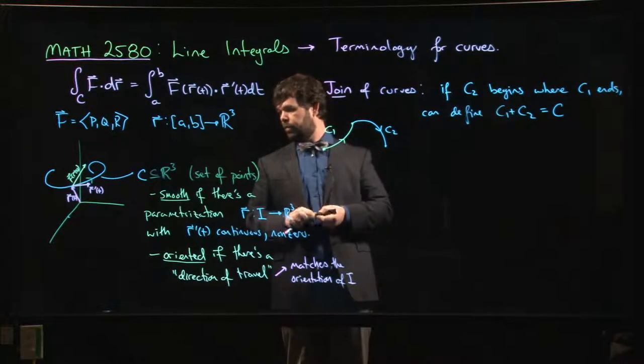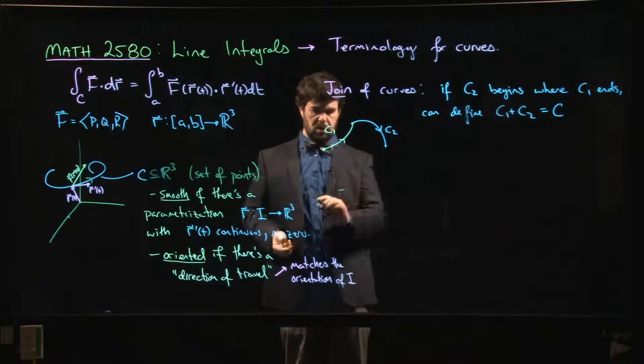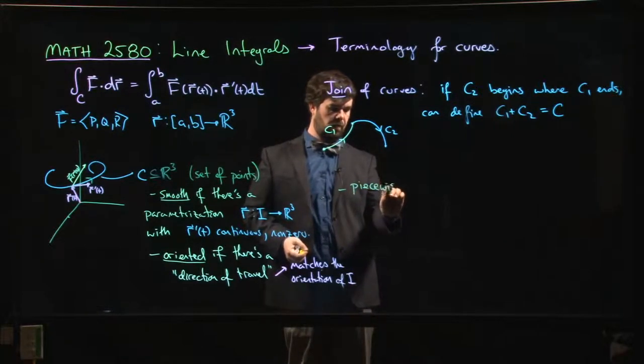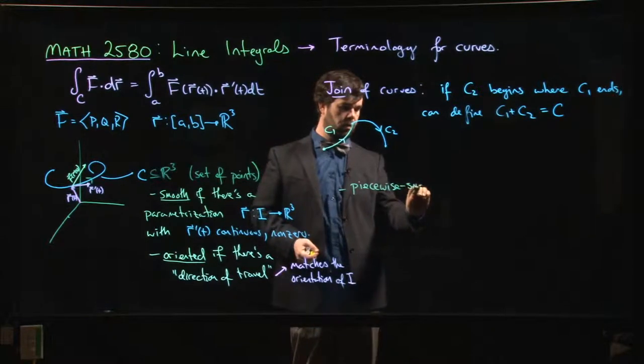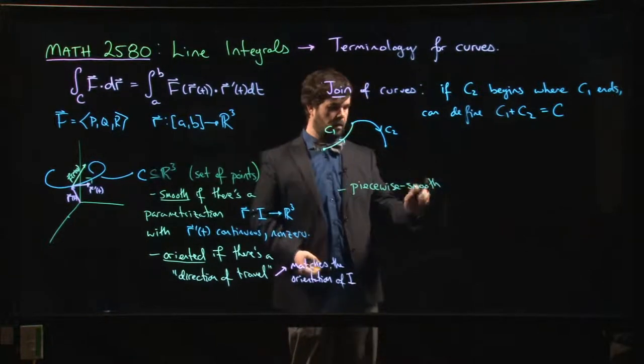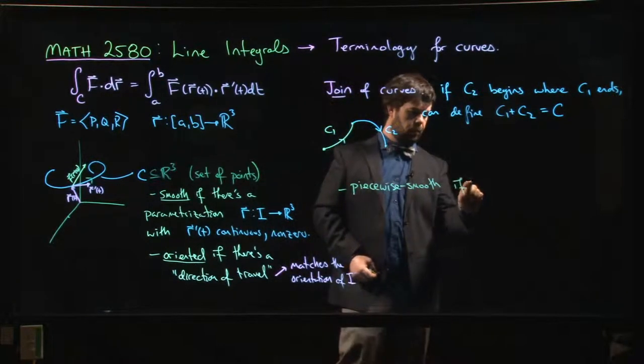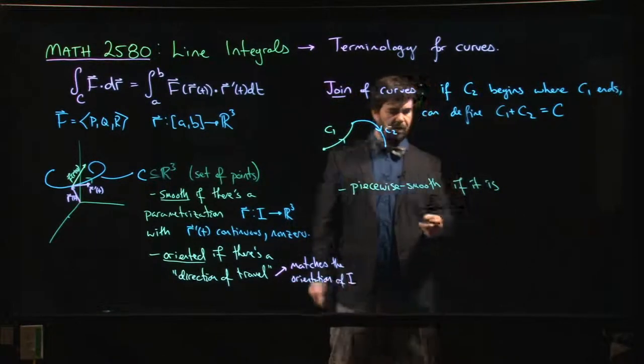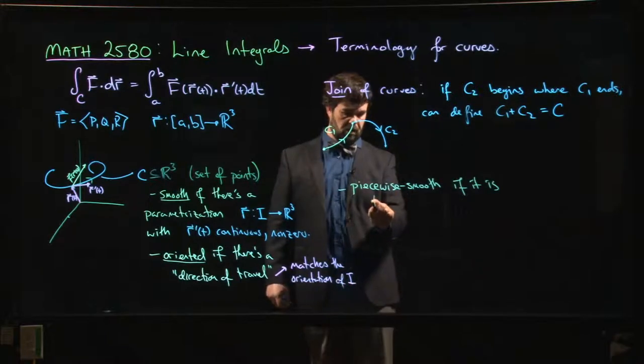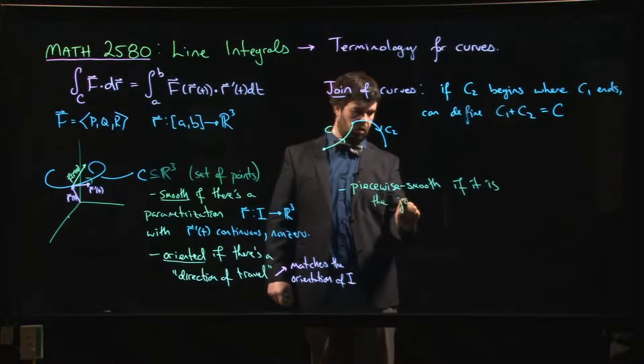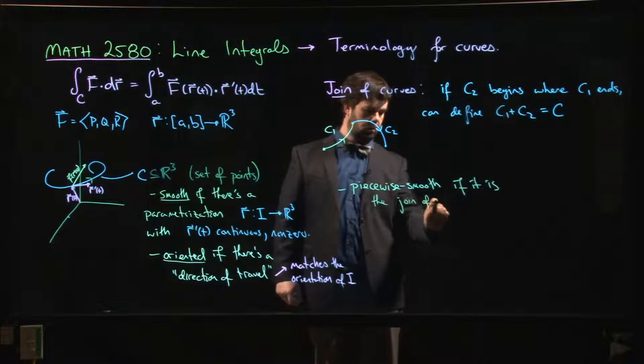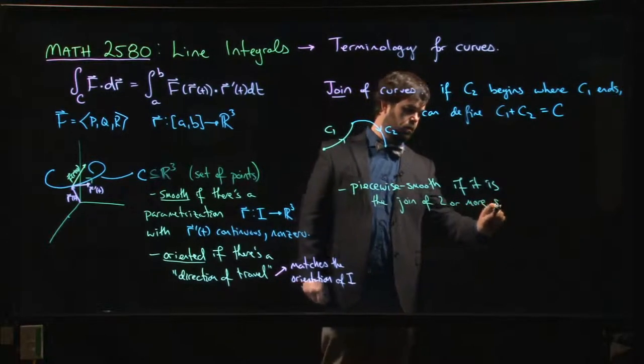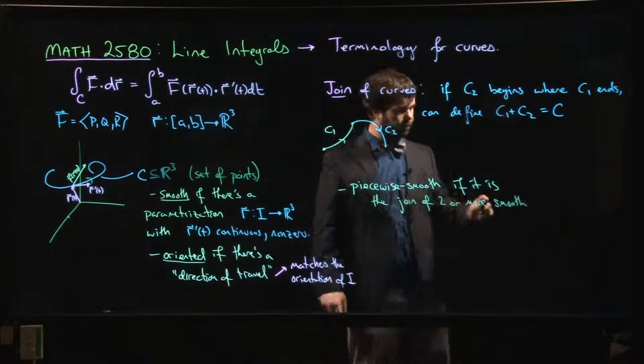Okay, so then we can add in another piece of terminology: a curve is so-called piecewise smooth. What does it mean for a curve to be piecewise smooth? A curve is piecewise smooth if it's the join of two or more smooth curves.